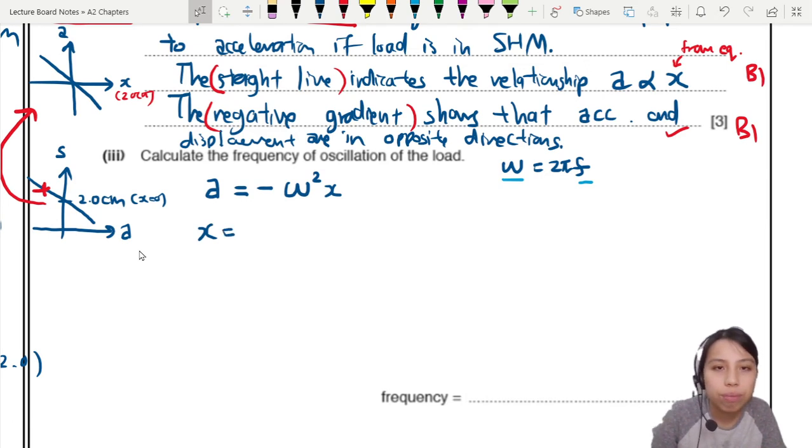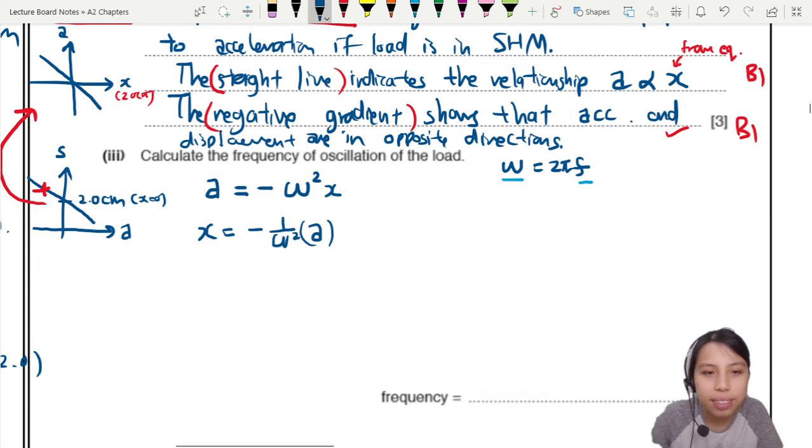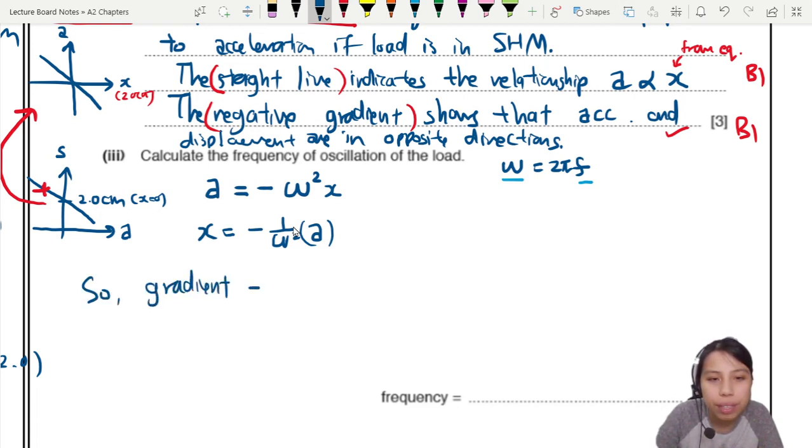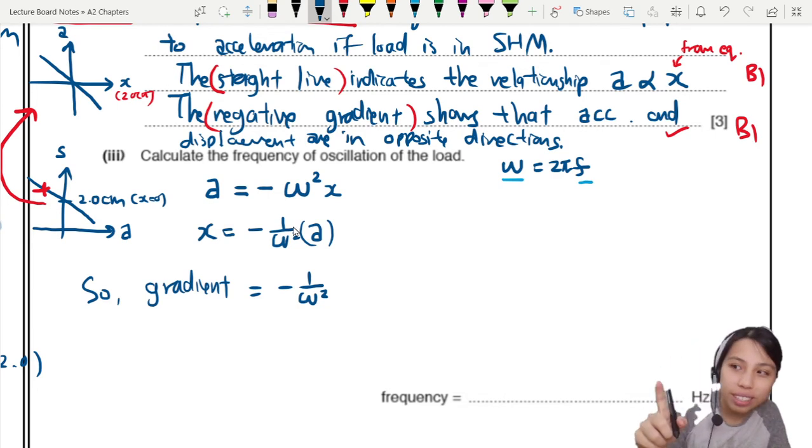So maybe from my graph, where I have s over a, or I can find displacement over a, I can probably find the gradient, find the omega. So let me rearrange this first. I will put x on one side. It goes to negative 1 over omega square times a. So my y-axis is this, my x-axis is here, and it's like a straight line equation. Y equals to negative mx. From here, I can say that the gradient of this graph will be 1 over omega squared. Hence, gradient of graph equals to negative 1 over omega square. So if I can find gradient, I can find the omega.